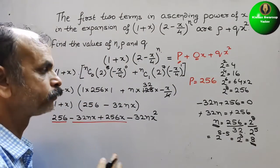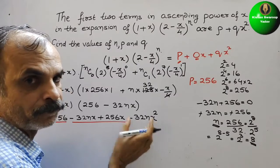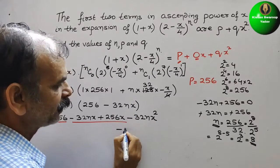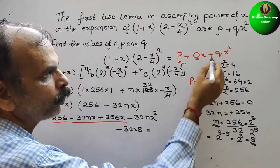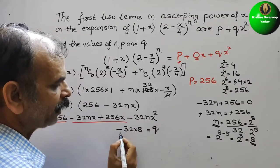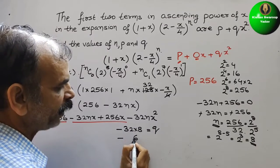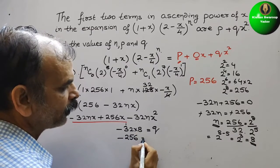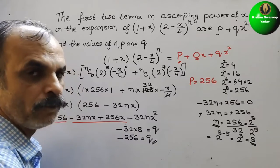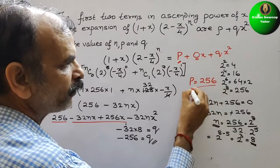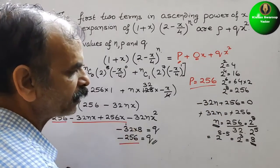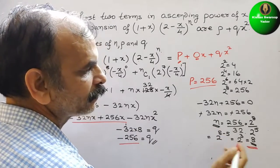So n = 8. Now we find q: the coefficient of x² is -32n = -32 × 8 = -256. So q = -256. Therefore, the final answers are p = 256, q = -256, and n = 8.